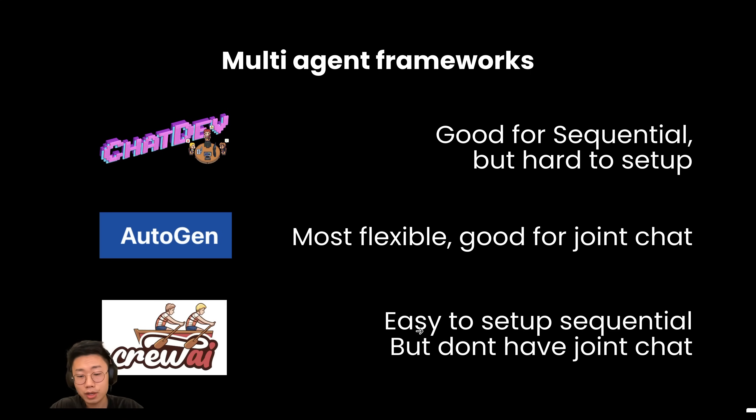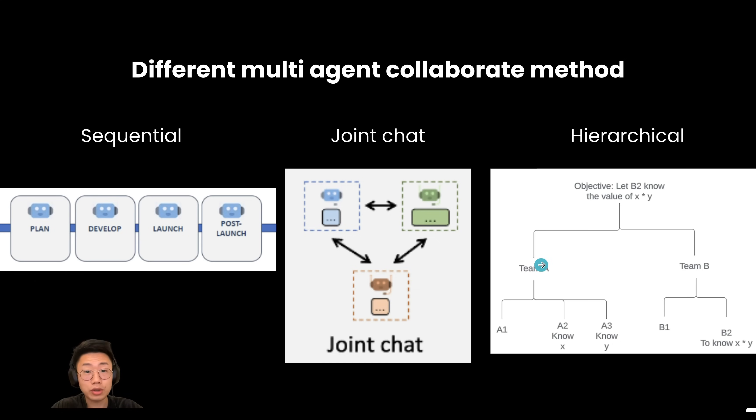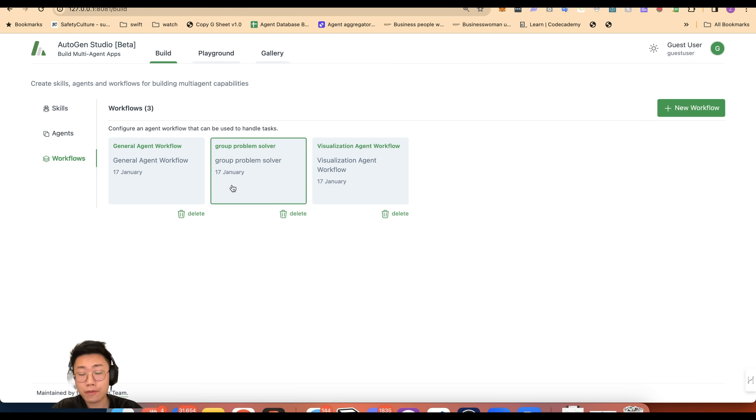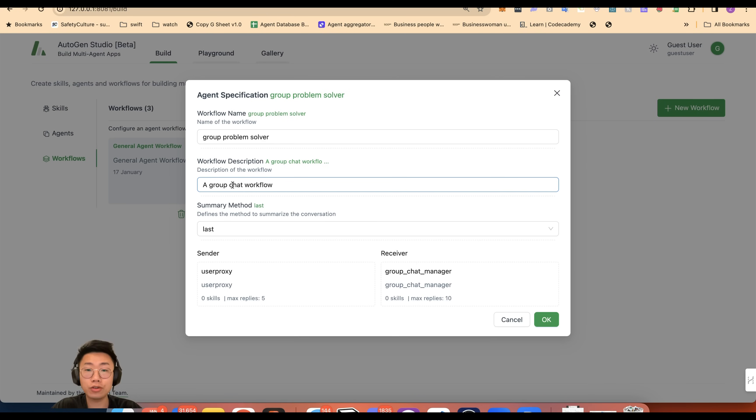And there's also a new one called Crew AI. It is really easy to set up sequential order, but the framework is not that flexible yet for other types of collaborations at this point. And Autogen recently just released their no-code interface called Autogen Studio, which really lowered the efforts to set up those communicative agent collaboration flows to solve complex problems.